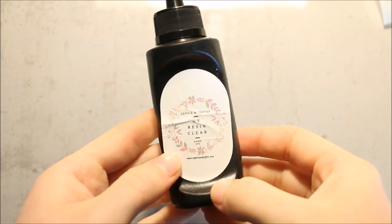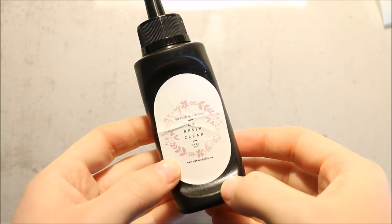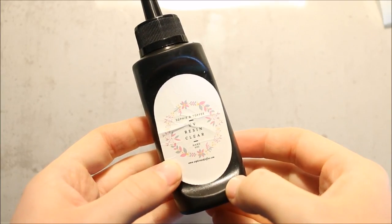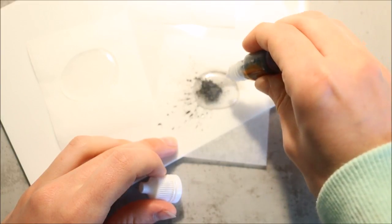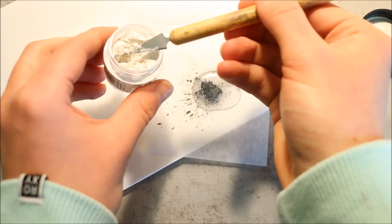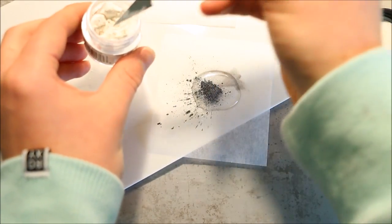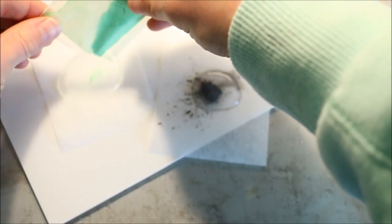To start off making my Halloween cat shaker, I took my Sophie and Toffee UV resin, which wasn't included in the box but I'll leave a link to where you can find it down below. I'm mixing three different colors for my background. I'm using the black pearl pigment from the box for one of them, my own Pearl X pigment to make a nice white pearly color, and then I'm also mixing in the green glow in the dark powder.